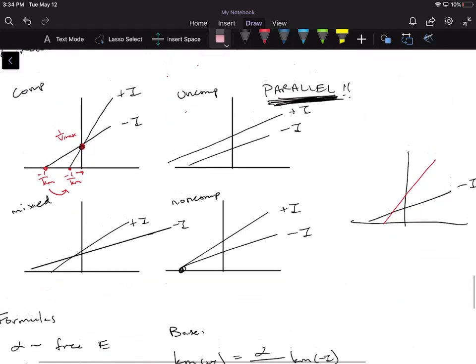So going back over here, there's two ways we can draw a mixed inhibitor. We can either draw it like this where the Km increases, or what we could also do is draw it where the Km decreases. So notice how the Km is decreasing in this case because we're moving to the left, and notice how the Vmax is also decreasing because we're moving up.